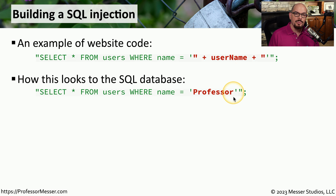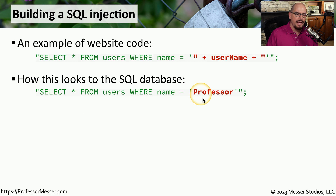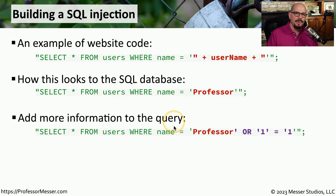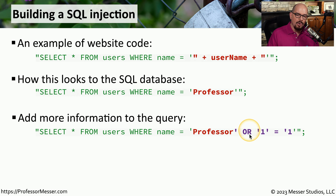In this particular query, you're asking the database to select all information where a username equals the username you're inputting into the app. So if you put in a name to search, such as 'professor', the code sent to the database says: SELECT * FROM users WHERE name = 'professor'. Normally that would be the end of the transaction. But if the application is vulnerable to code injection, we can add our own SQL code into this query, such as: WHERE name = 'professor'.